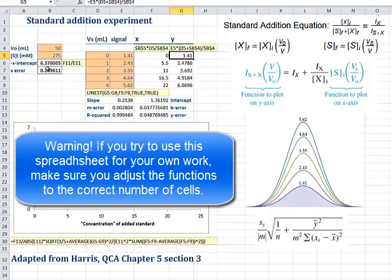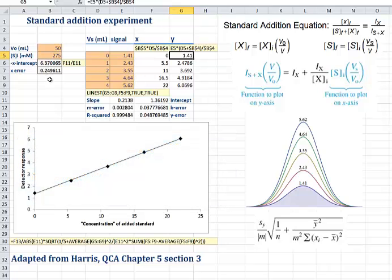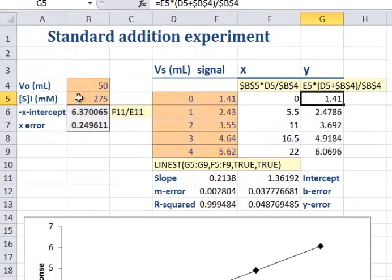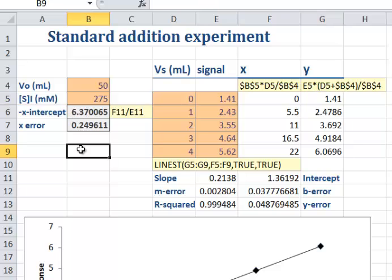Once we put all that together, we get an error which is in the same units as this one here. So the units are going to all be in the same units as the stock solution. The x-intercept says that my concentration of my original sample is 6.37 millimolar, error plus or minus 0.25. Since we know that the first digit of the uncertainty is the last significant digit, it looks like we've got a final value of 6.4 plus or minus 0.2 millimolar as our answer.